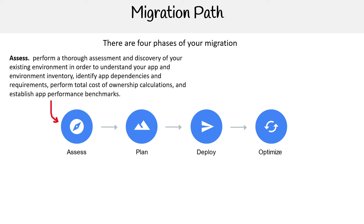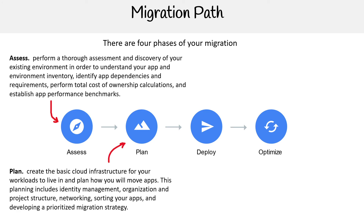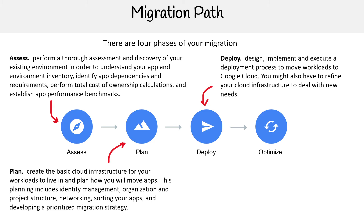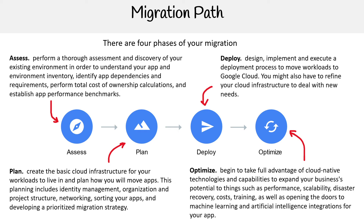For Assess: perform a thorough assessment and discovery of your existing environment in order to understand your app and environment inventory, identify app dependencies and requirements, perform total cost of ownership calculations, and establish app benchmarks. For Plan: create the basic cloud infrastructure for your workloads to live in and plan how you will move apps — this includes identity management, organization, project structure, networking, sorting your apps, and developing a prioritized migration strategy. For Deploy: design, implement, and execute a deployment process to move your workloads to Google Cloud; you might also have to refine your cloud infrastructure to deal with those needs. For Optimize: begin to take advantage of cloud-native technologies and capabilities to expand your business potential — things such as performance, scalability, disaster recovery, cost management, as well as opening the doors to machine learning and AI integrations for your app.